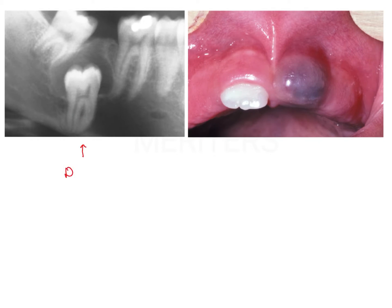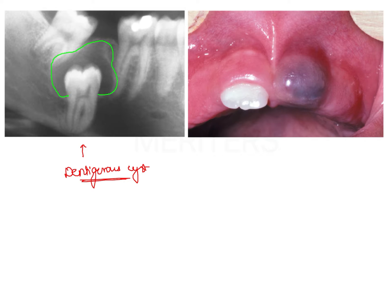Looking at some pictures: the first shows a dentigerous cyst. We should observe important characteristic features such as pericoronal location. First and foremost, there is an unerupted tooth, because within the bone the unerupted tooth develops the cyst. Here we can observe an unerupted second molar with pericoronal location of the cyst, and the point of attachment is at the level of the cementoenamel junction.